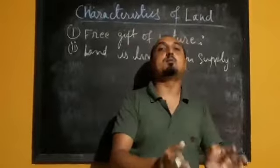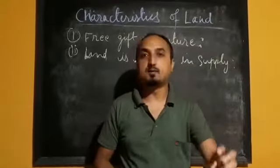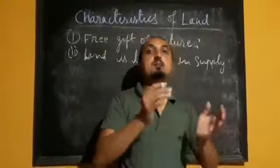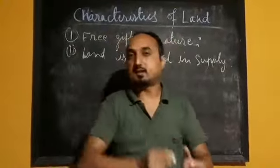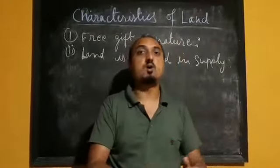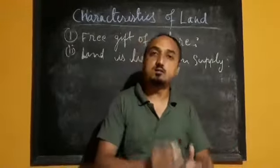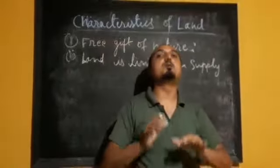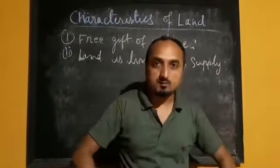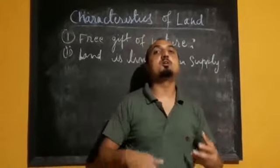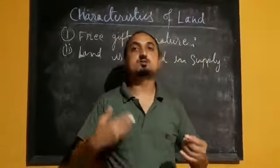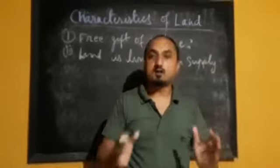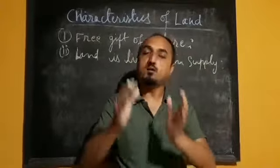If we take the example of other factors of production like labor or machinery and equipment — capital and labor can be increased over time. For example, if the population of a country increases, the number of the labor force may increase. Similarly, if the number of industries and factories worldwide increases, the number of machinery, equipment, and tools may also increase. But the supply of land cannot be increased; the supply of land will remain fixed.